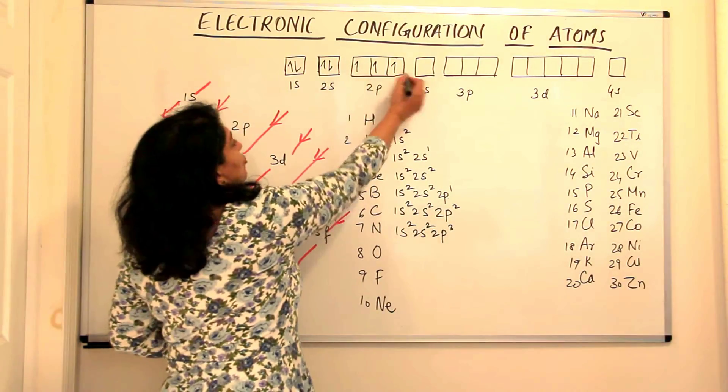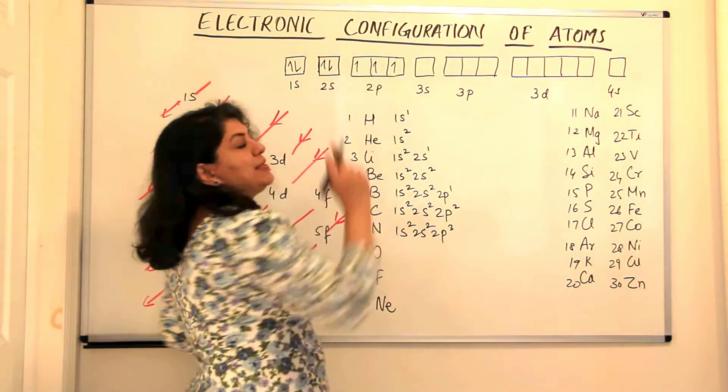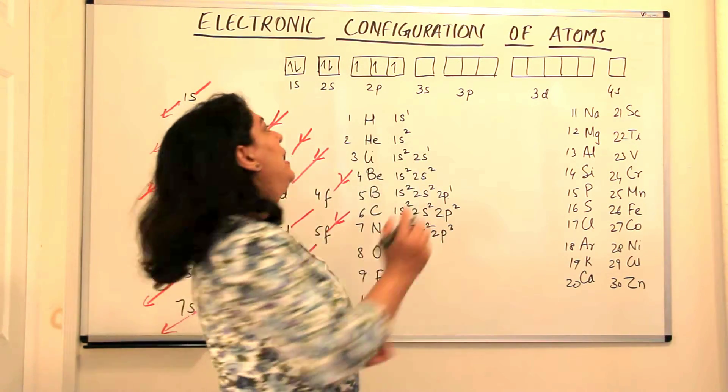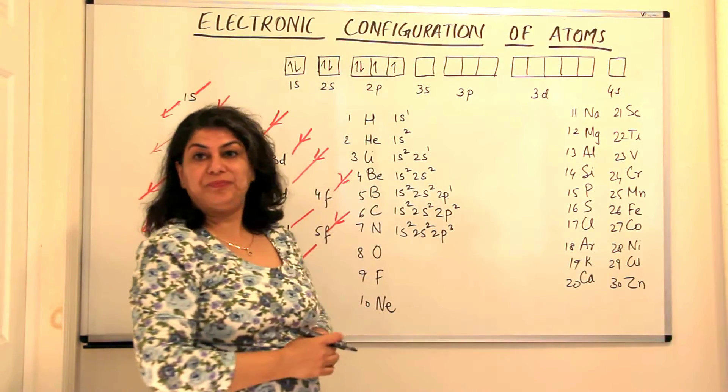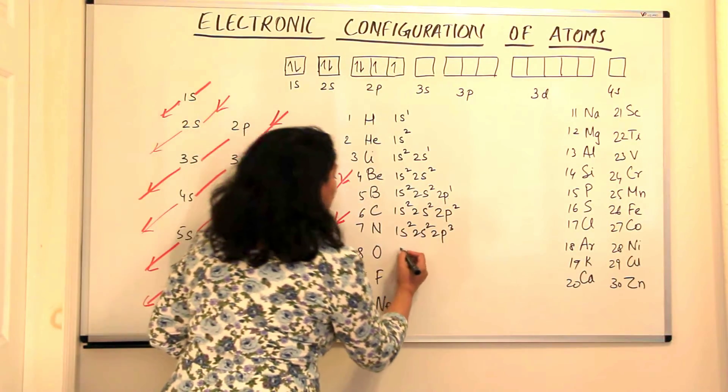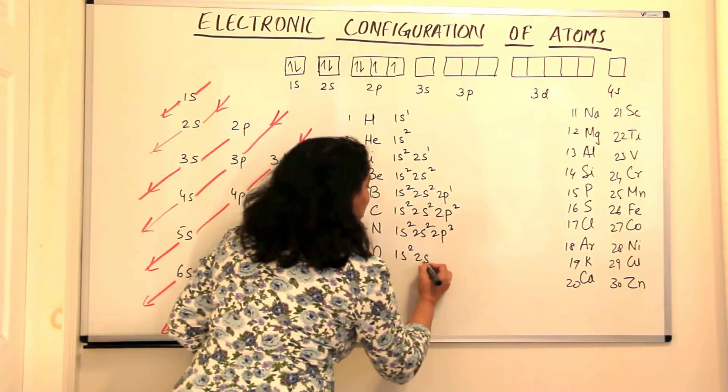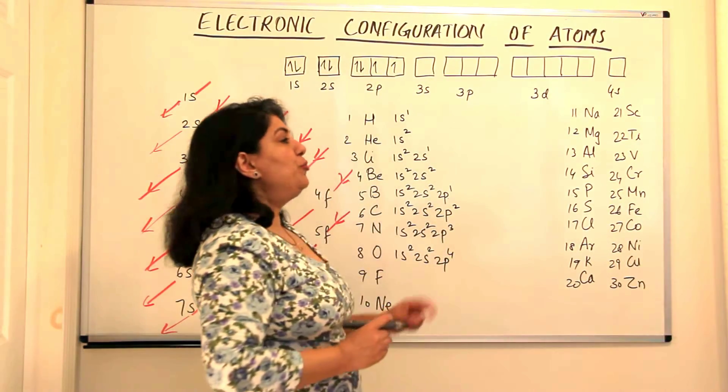Next is oxygen. Oxygen has eight electrons. So now after all the 3p orbitals have been filled, the degenerate orbitals have been occupied singly, pairing occurs in oxygen. So you have one pair here. So the configuration would be 1s2, 2s2, 2p4 or 2px2. You could say any one of these has two and the other two have one each.